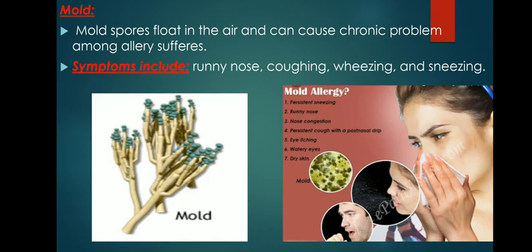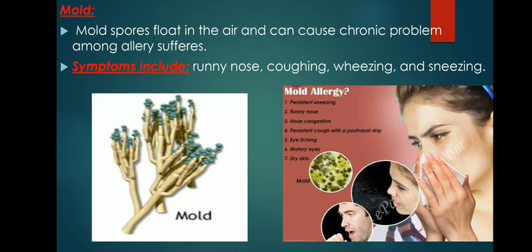Mold allergy: If you have an allergy that occurs over several seasons, you may be allergic to the spores of mold or other fungi. Molds live everywhere, and upsetting a mold source can send the spores into the air. Molds and fungi are different from plants or animals in how they reproduce and grow. The seeds, called spores, travel through the air. Some spores spread in dry, windy weather; others spread with fog or dew when humidity is high. Inhaling the spores causes allergic reactions in some people. Allergic symptoms from fungi spores are most common from July to early fall, but fungi grow in many places both indoors and outside, so allergic reactions can occur year-round.